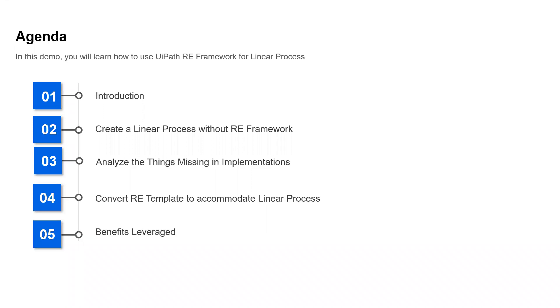First, we are going to see the introduction. Then we are going to create a process without using the RE Framework, then we'll analyze what things were missing in the implementation. After that, we are going to convert the official Robotics template to a template that can accommodate a linear process. At the end, we'll see the benefits we've leveraged with the help of the Robotics Enterprise Framework.